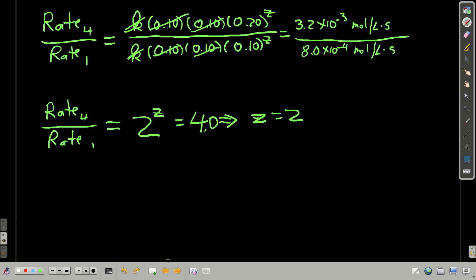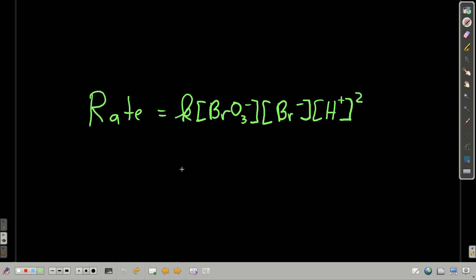So the form of the rate law looks like this. Rate is equal to the rate constant k, times the concentration of bromate to the first power, bromide to the first power, and hydrogen ion squared.